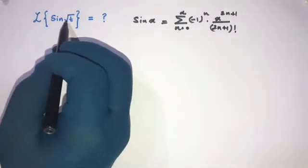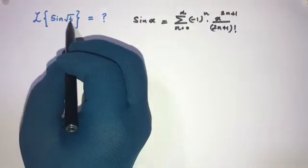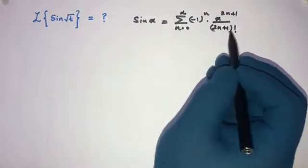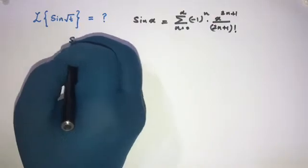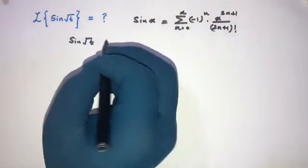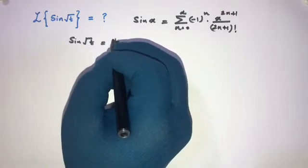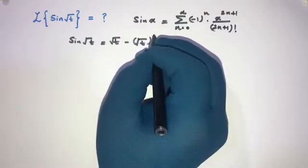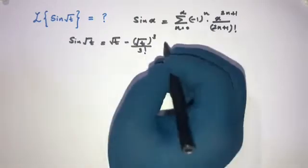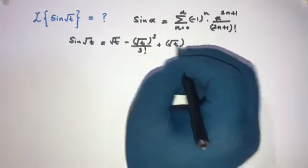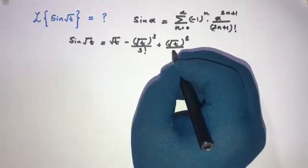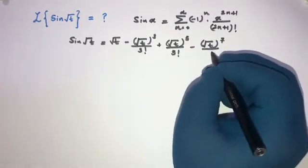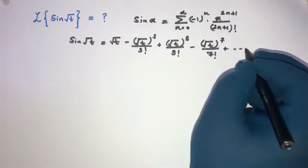We have sine of square root of t, so instead of x we substitute the square root of t. Plugging in n = 0, 1, 2, 3, ... we can write: sine(√t) = √t minus (√t)^3 over 3! plus (√t)^5 over 5! minus (√t)^7 over 7! plus so on.